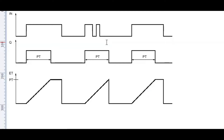Now let's come to the graph view of this timer and see how it works. I have found this graph from the help book of TIA Portal. You can get or see this graph by pressing F1 on the timer.